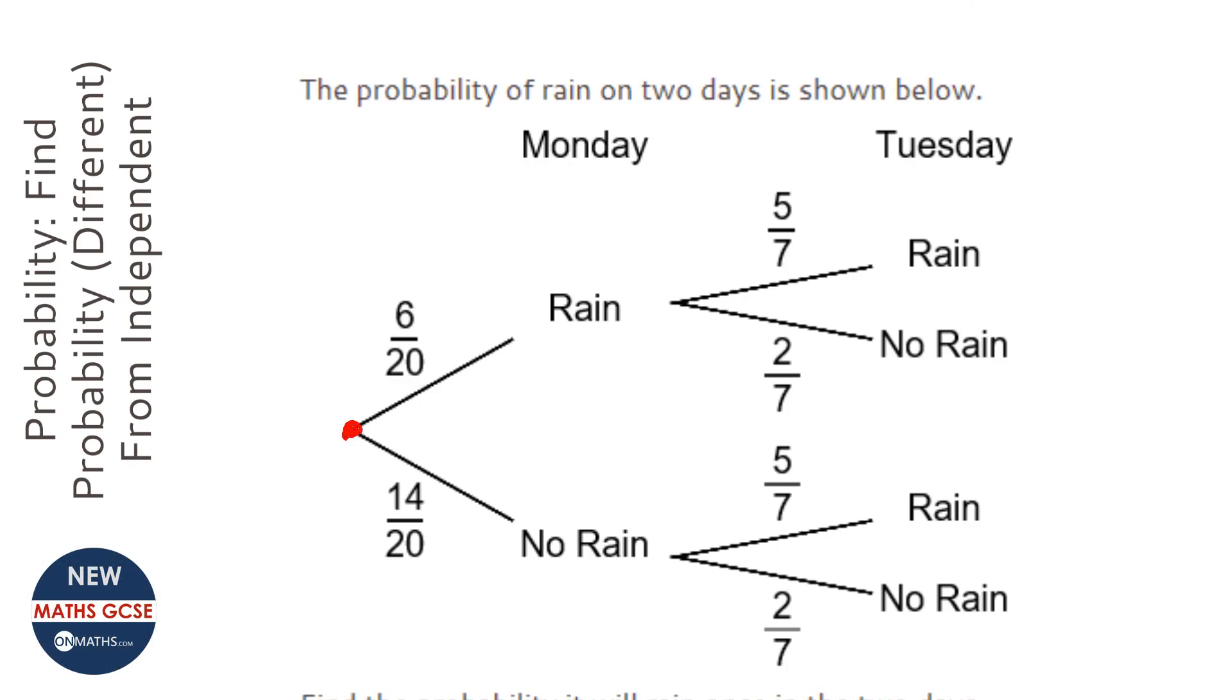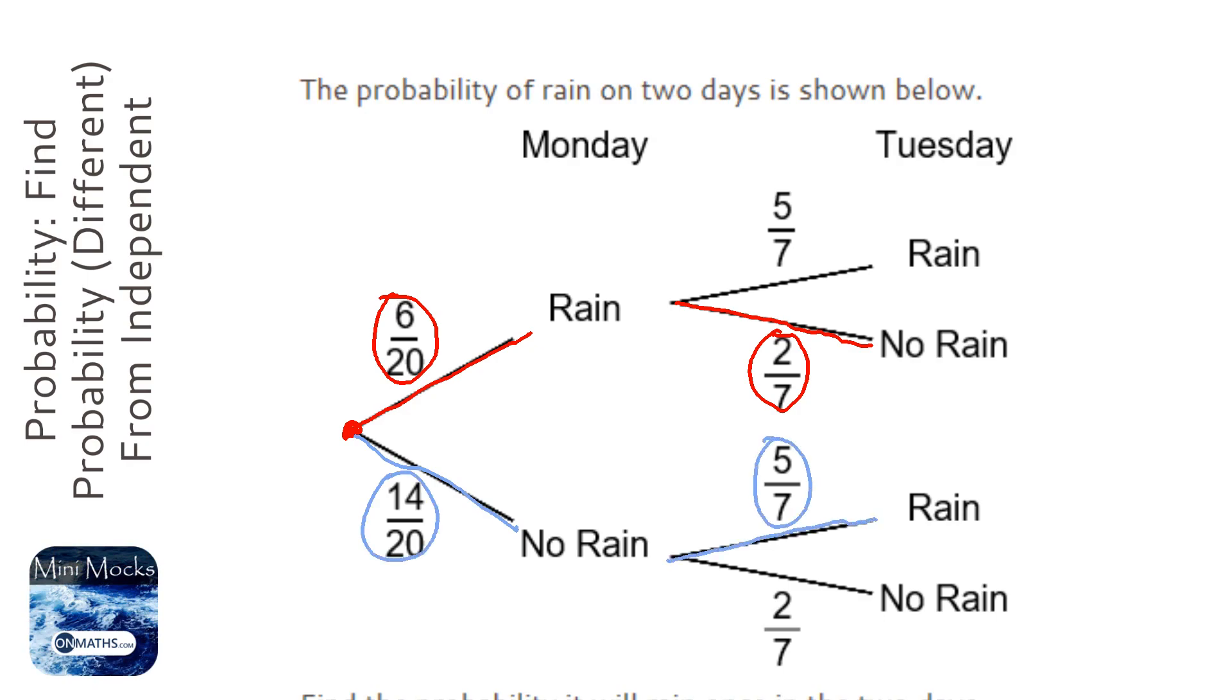Starting here, it could rain on the first day but then obviously not rain on the second day, because if it rained on the second day it would have rained twice. Or it could not rain on the first day and then rain on the second day, rain on the Tuesday. So we work out the probability that it rains on Monday but not on Tuesday.